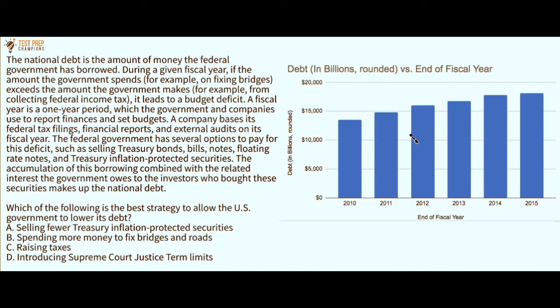Which of the following is the best strategy to allow the U.S. government to lower its debt? A: Selling fewer treasury inflation-protected securities. B: Spending more money to fix bridges and roads. C: Raising taxes. Or D: Introducing Supreme Court justice term limits. The graph shows debt in billions from 2010 to 2015. Pause the video if you want to figure this out, then unpause and we'll go over the solution.